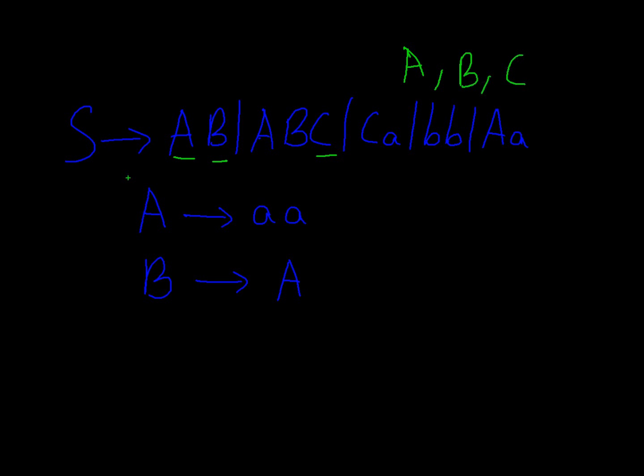Then we shall see all the productions, and each of these symbols should derive something. So A derives something, B derives something, but C is missing. Because C is missing, we shall remove all the productions in S that contain C. So we shall remove this and we shall remove this. We are left with A and B.